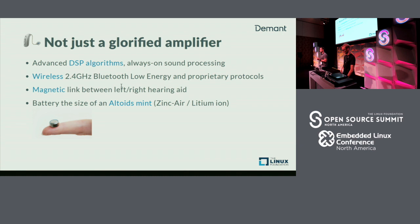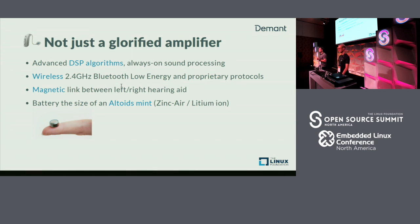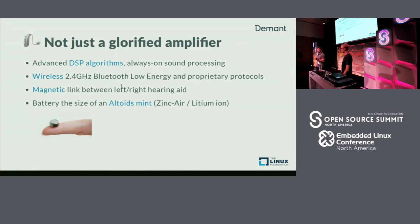A modern hearing aid also includes 2.4 GHz Bluetooth Low Energy, enabling connections to your iPhone, audio streaming directly from the phone to the ear, and even TV audio streaming directly into the hearing aid. It also has a magnetic data link between each ear to sync up volume, program selection, and stuff like that. And it does all that with a battery the size of an Altoid mint — a tiny battery — and it has to have a battery life of multiple days.